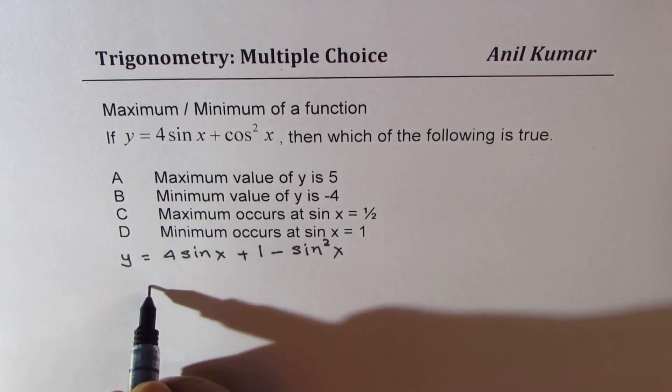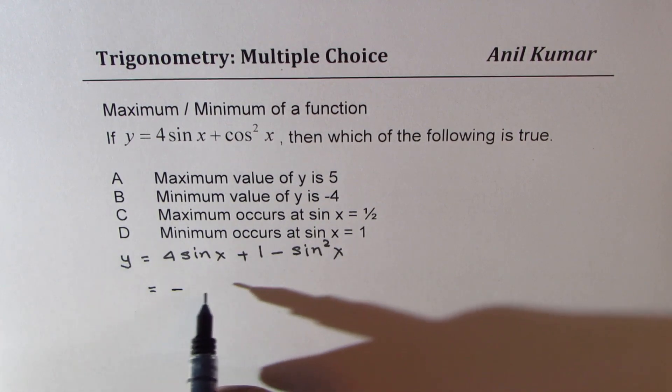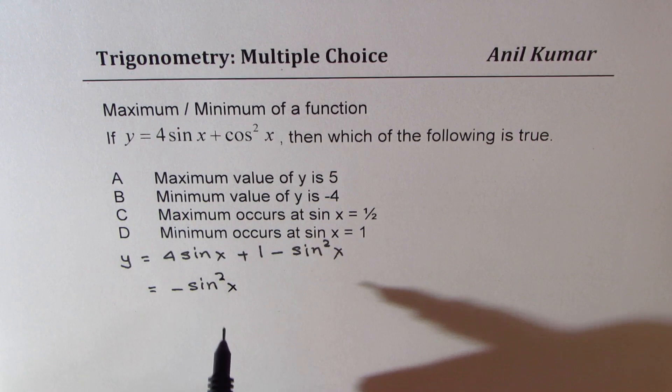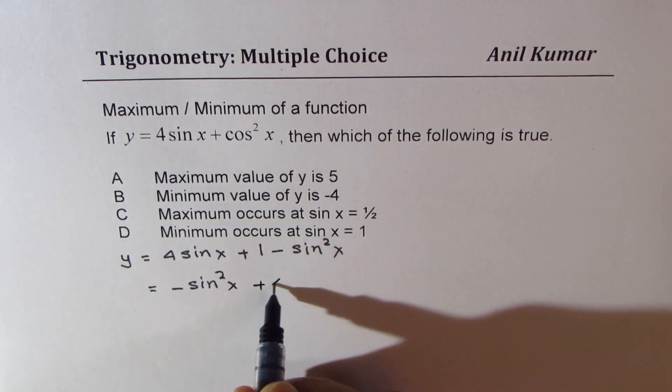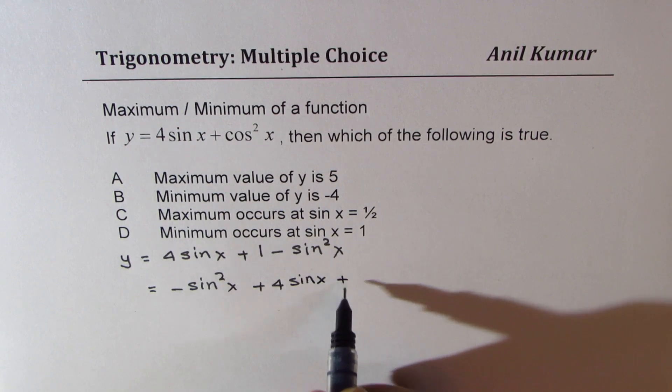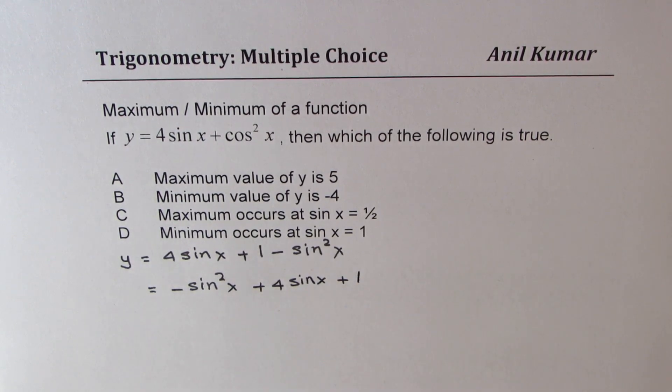So we get one equation in just sin x. Let's rearrange it. We could write this as minus sin squared x plus 4 sin x plus 1. At this stage, those who have done calculus can actually find the derivatives and maximum minimum. But here is a much simpler method. We'll do completing the squares.